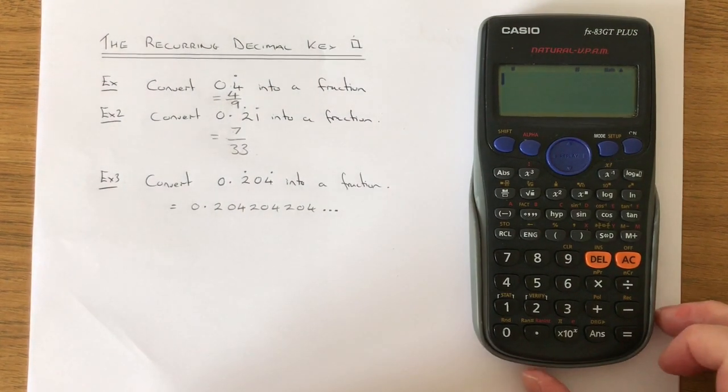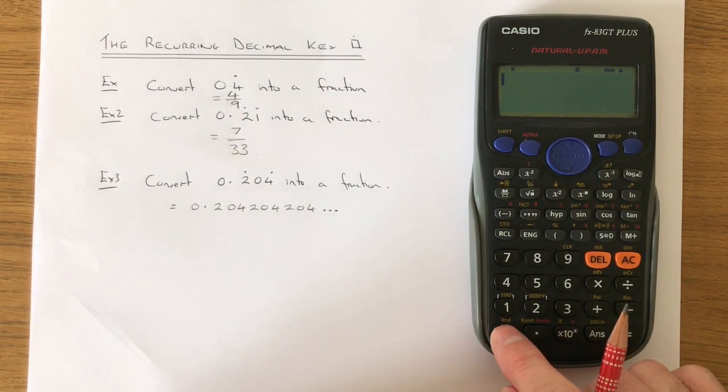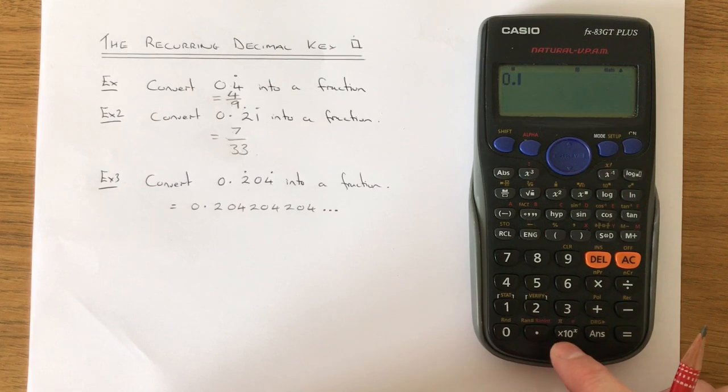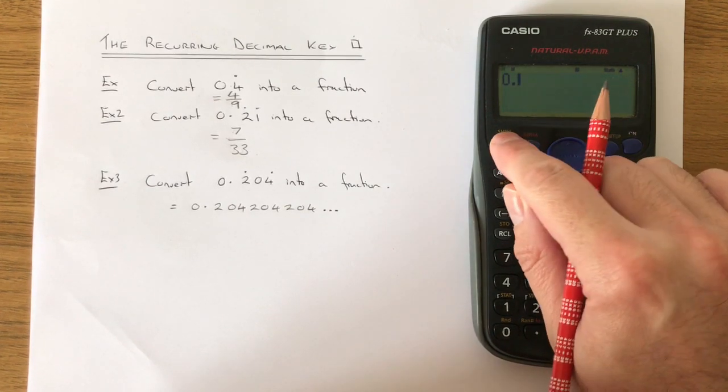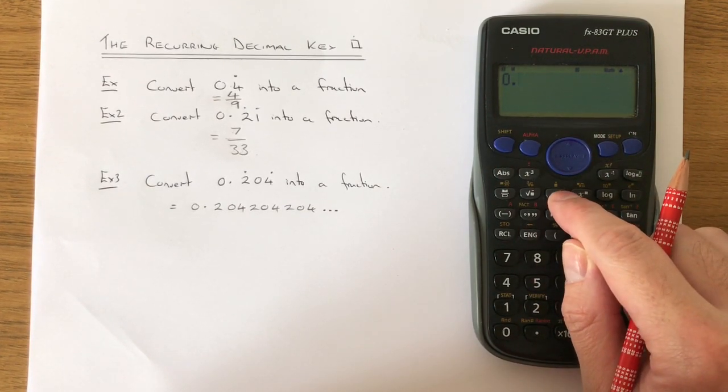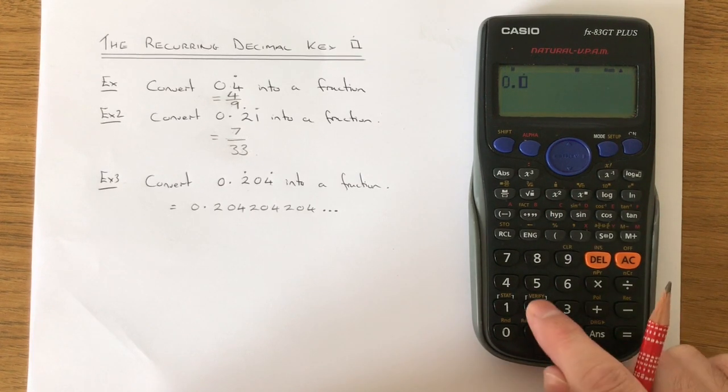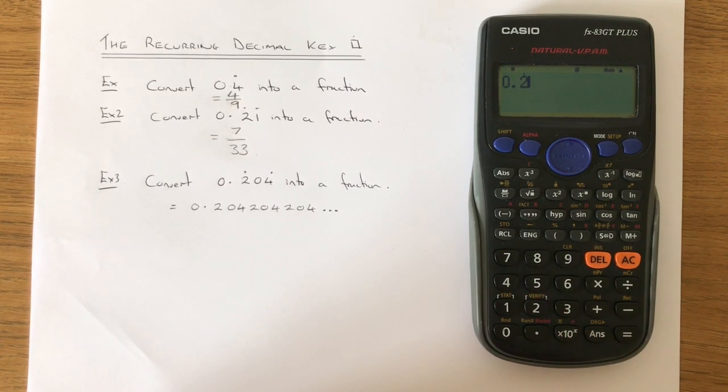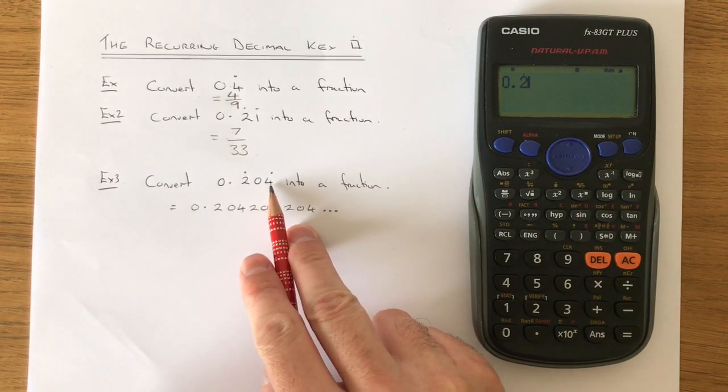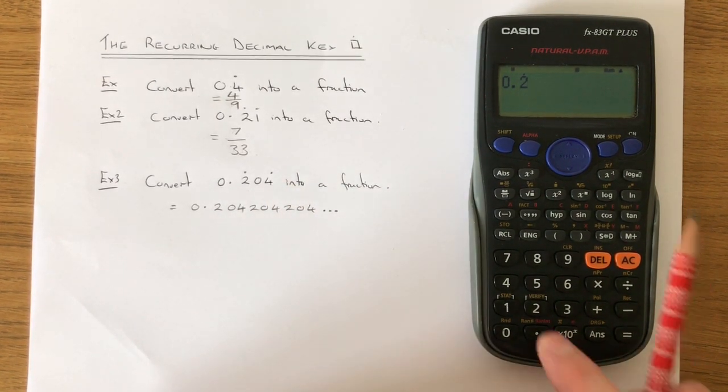To type this one in, first of all press the 0, then the decimal point. Then hit the recurring decimal key again. Put a 2 in that box. Now there isn't a dot on the 0, so we need to first put the last digit in, which is the 4.